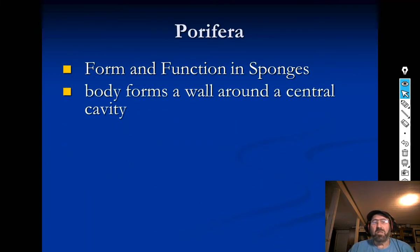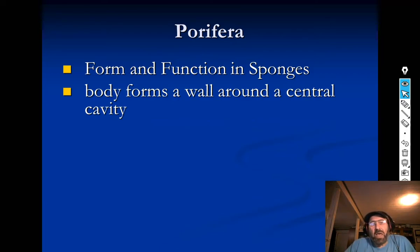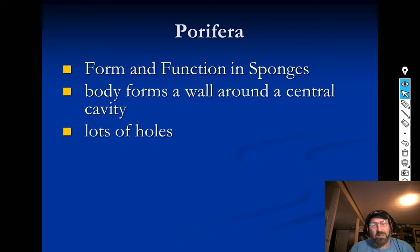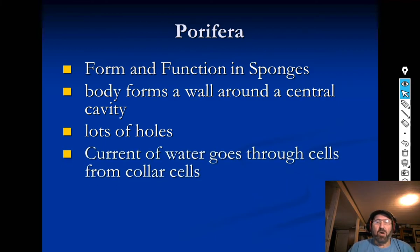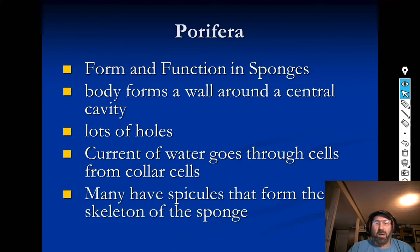Looking at form and function in sponges: they have a body wall that forms around a central cavity, and they have lots and lots of holes — hence Porifera, 'por' meaning hole, 'fera' meaning bearing. A current of water goes through the cells from collar cells, and the cells the water flows through are called porocytes. Many sponges also have structures called spicules that form the skeleton.